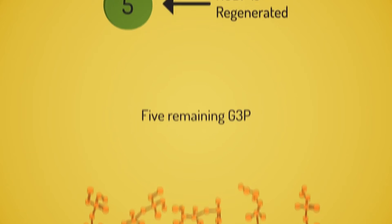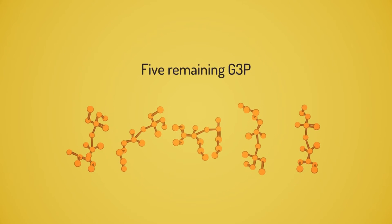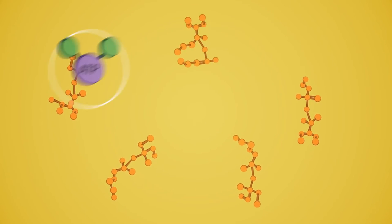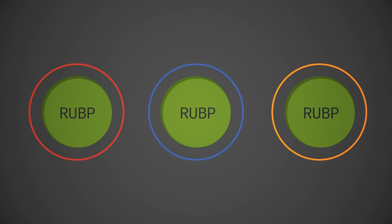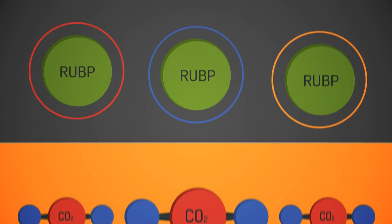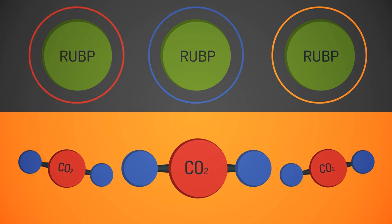Remember the five molecules of G3P remaining? Well, they are quickly rearranged using the power of ATP. After the rearrangement, three RUBP molecules are created that can accept CO2 again.